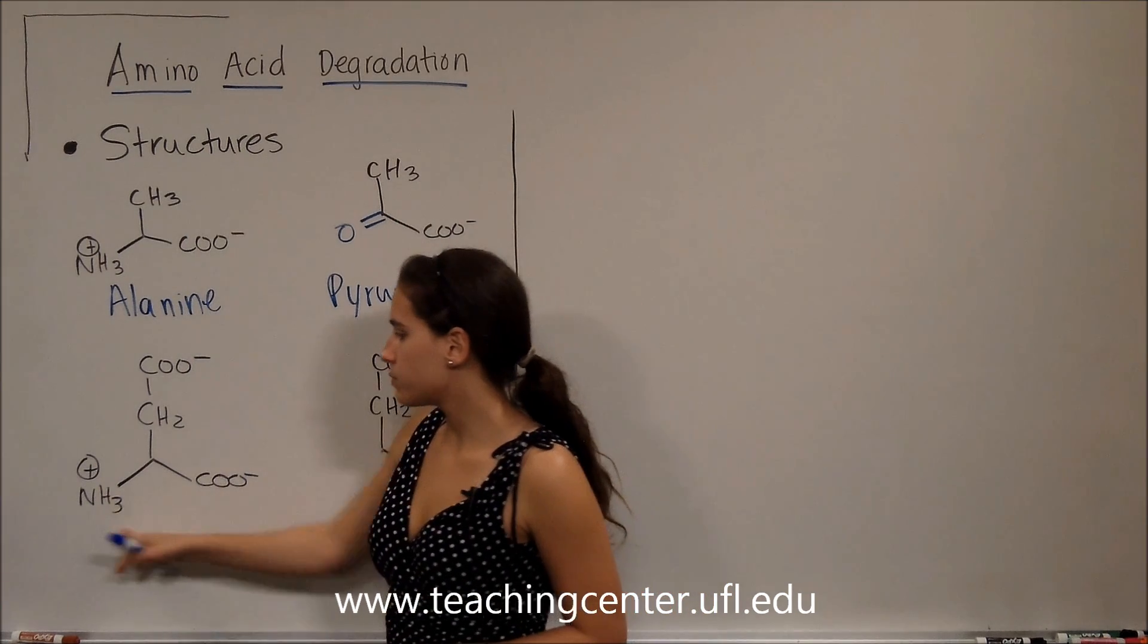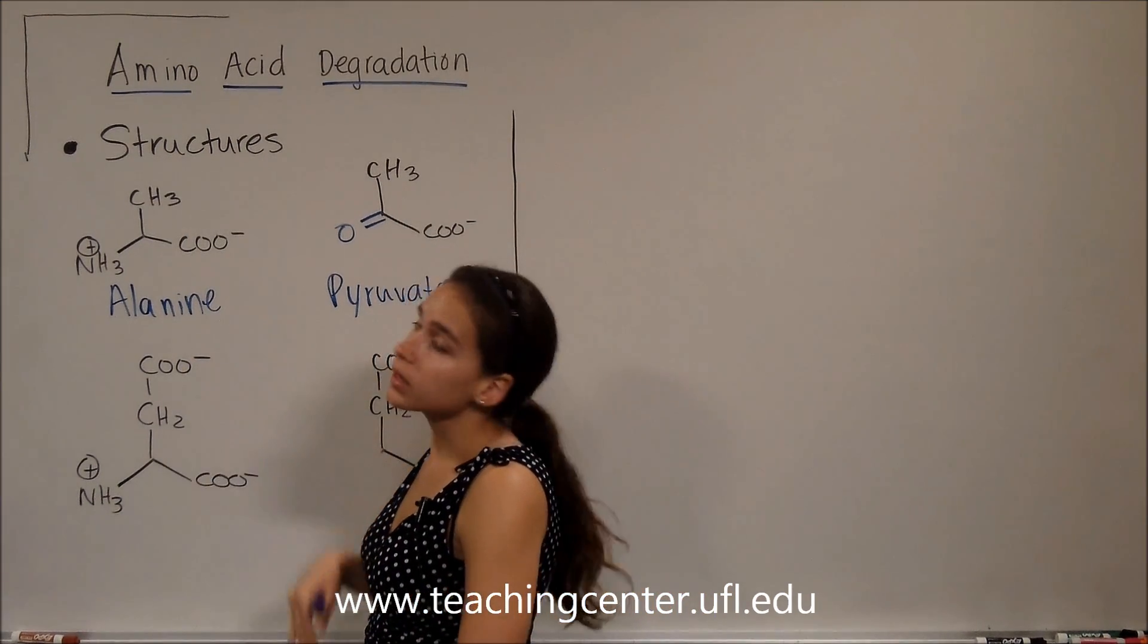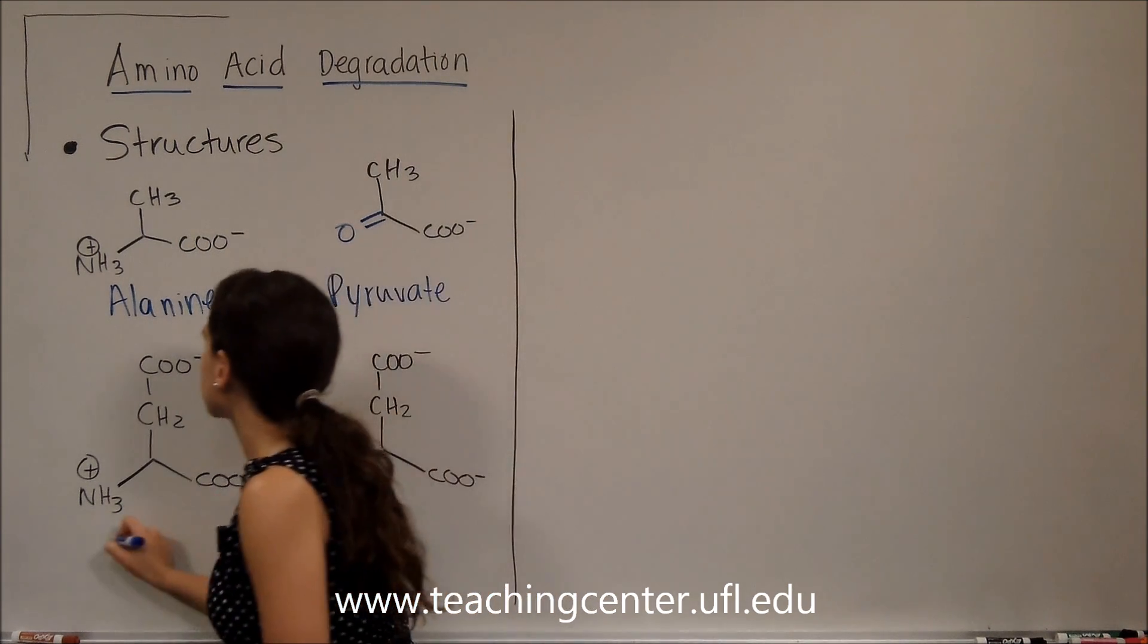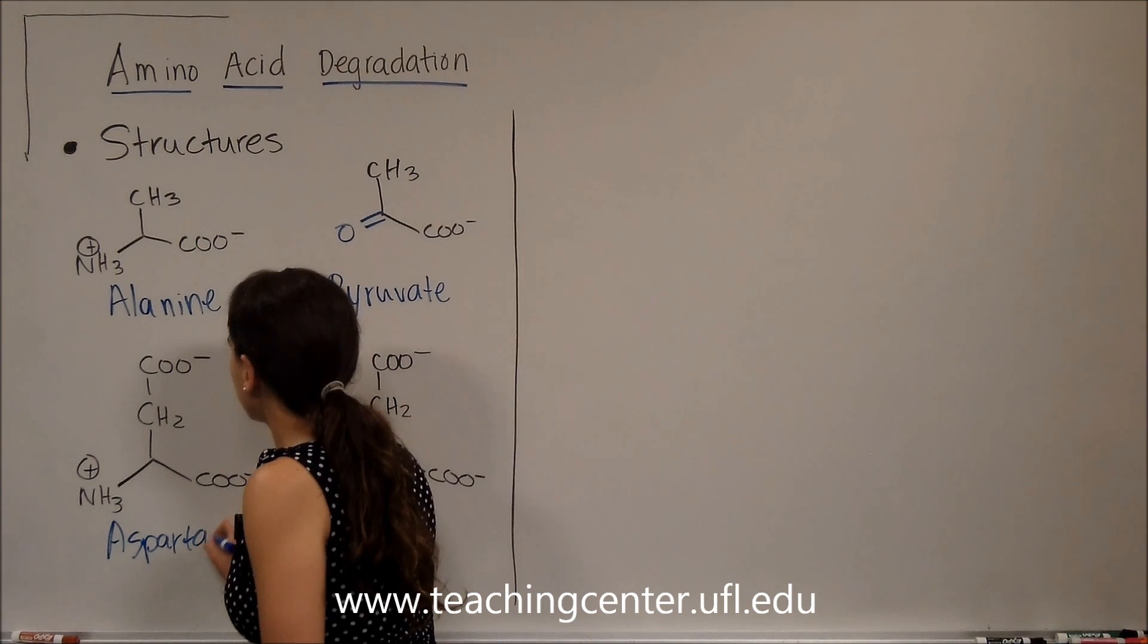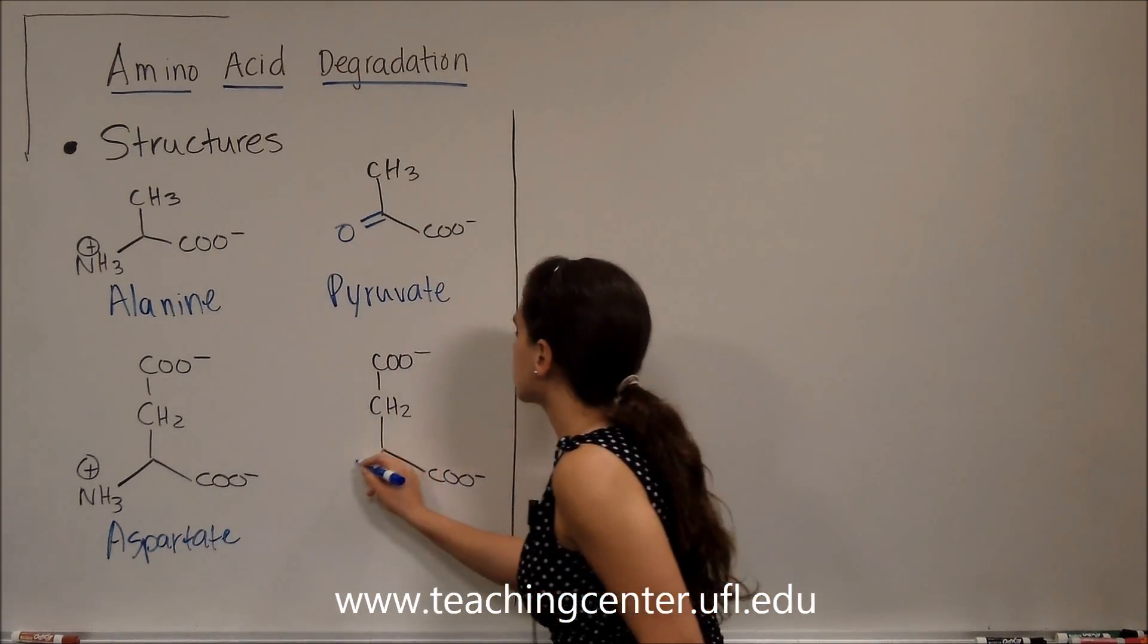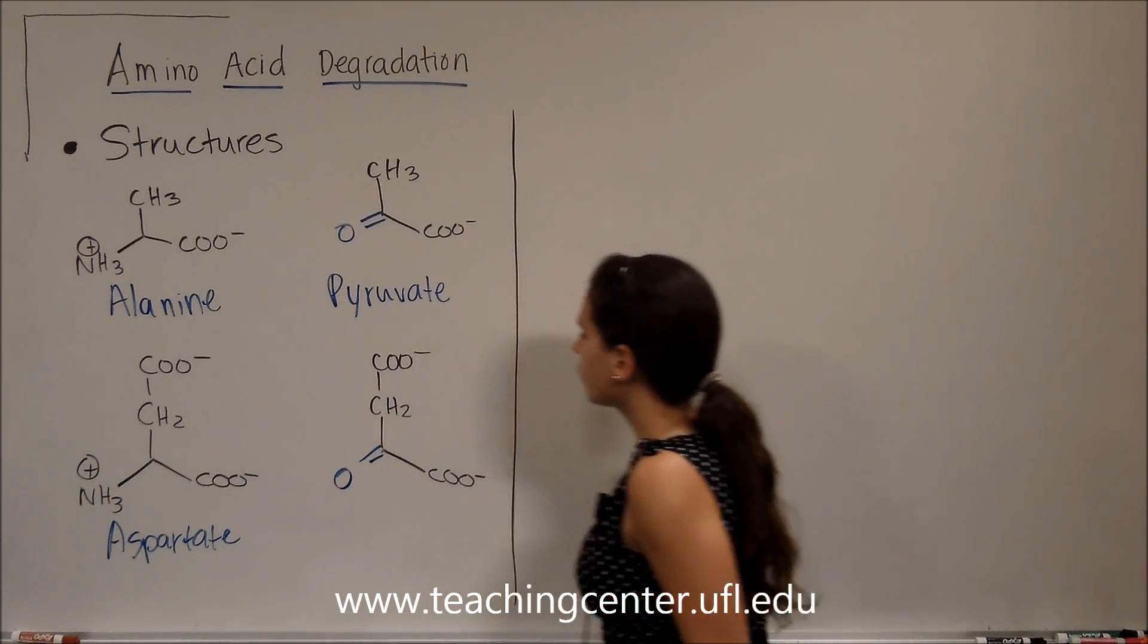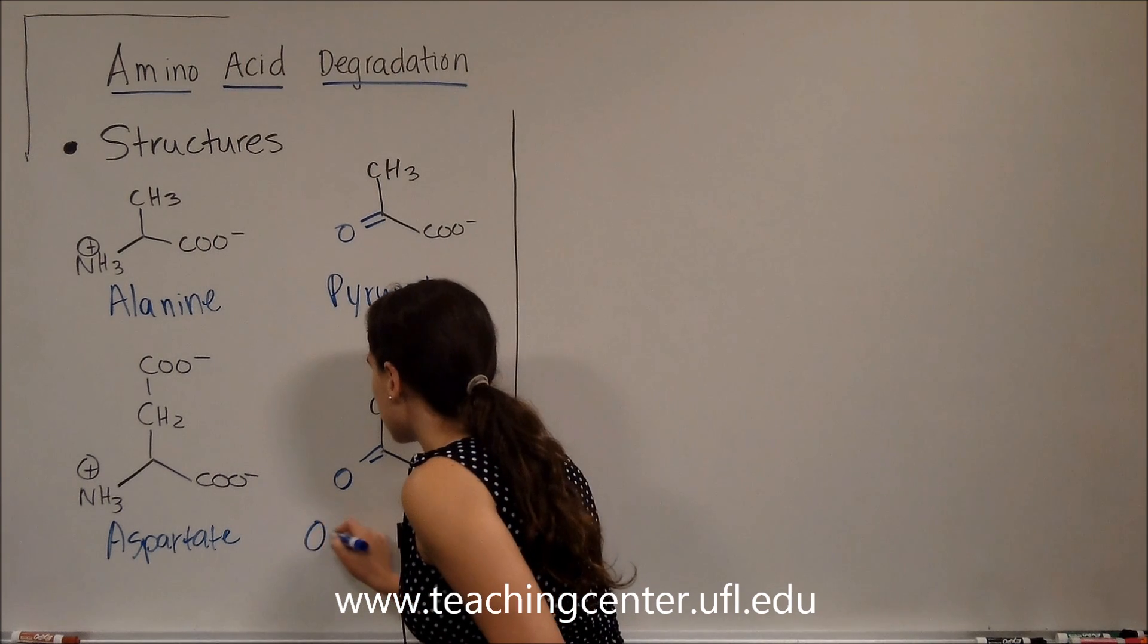Now if we look over here, we have another amino acid. Knowing that there's one CH2 in a carboxylic acid, we know that it's aspartate. If we do the same thing we did with the alanine and pyruvate, and we take that amino group and convert it into a double bond O, we're going to have oxaloacetate.